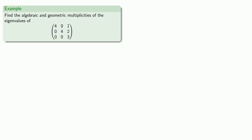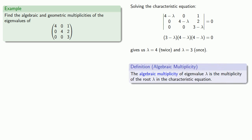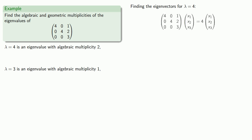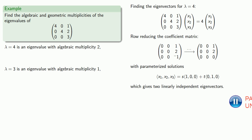Let's take a look at another example and find the algebraic and geometric multiplicities of the eigenvalues of this matrix. We'll set up and solve our characteristic equation. The solutions are going to be lambda equals 4 twice and lambda equals 3 once. So lambda equals 4 is an eigenvalue with algebraic multiplicity 2. To find the geometric multiplicity, we find the eigenvectors for lambda equals 4 by setting up our system of equations and reducing the coefficient matrix. We find that the eigenvectors have parameterized solution s(1, 0, 0) plus t(0, 1, 0), meaning we have two linearly independent eigenvectors.